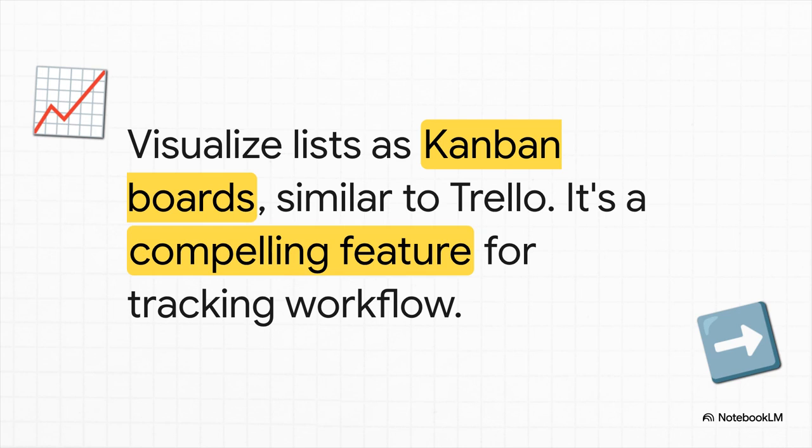But don't count Workflowy out just yet. In the last few years, it's added some absolutely killer features. The big one is the Kanban board view — like in Trello. It lets you take any list and instantly visualize it as columns, so you can drag and drop your tasks from to-do to in-progress to done. Honestly, it's a game-changer for tracking projects.